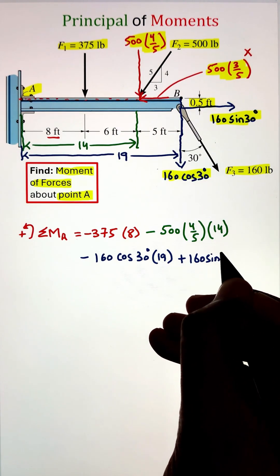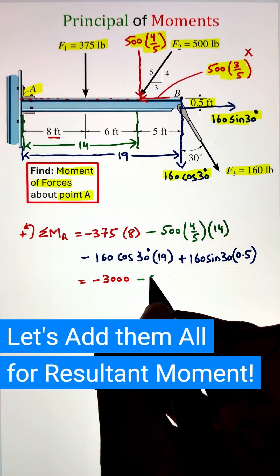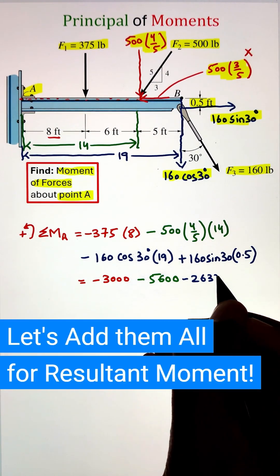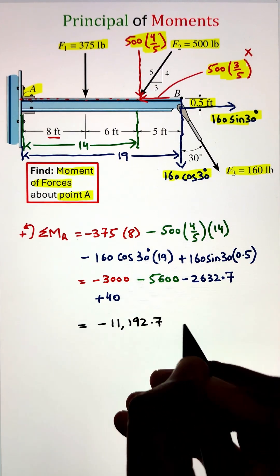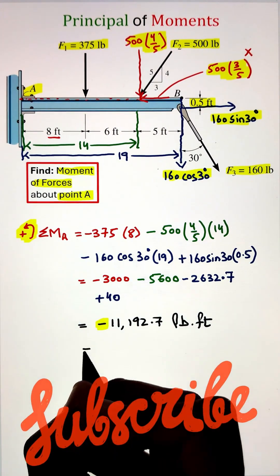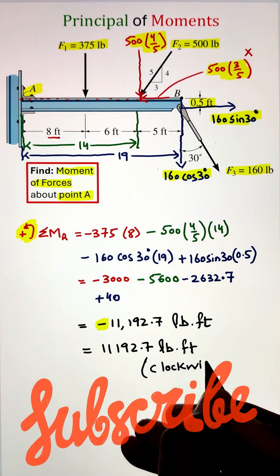Now, once we have all the moments figured out, let's add them all together. Simplifying, we get the value of negative 11,192.7 pound-feet. Since we have considered the counterclockwise moment as positive, the negative sign indicates that the resultant moment acting at point A is in the clockwise direction.